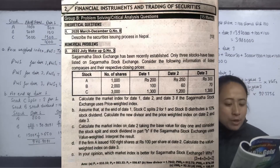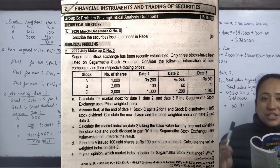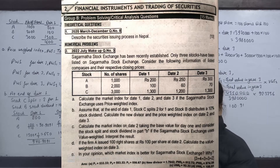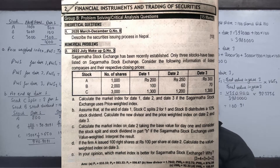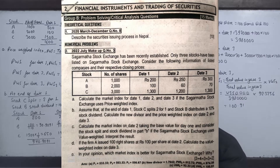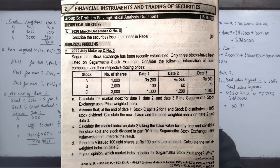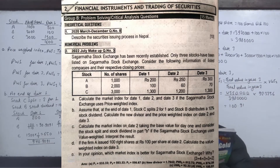For Part B, assume that at the end of Date 1, stock C splits 2-for-1 and stock B distributes a 10% stock dividend. Calculate the new divisor and the price-weighted index on Date 2 and Date 3.